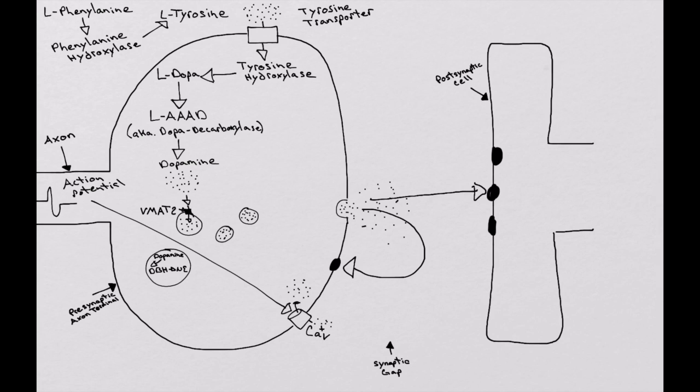Another thing that can occur is it can bind to receptors on the postsynaptic cell and activate those receptors and cause whatever response those receptors provide. And we'll talk about those in future videos. Or the norepinephrine can just be brought right back into the cell. And so the norepinephrine is brought in through a norepinephrine transporter back into the axon terminal. Also of note is norepinephrine can also travel through dopamine transporters as well.